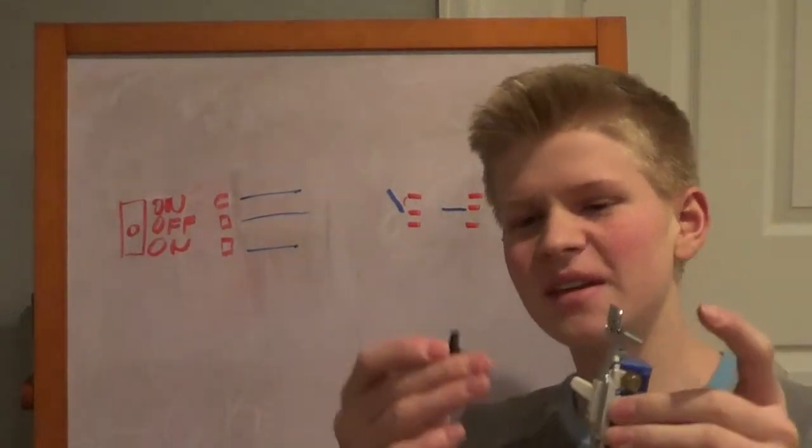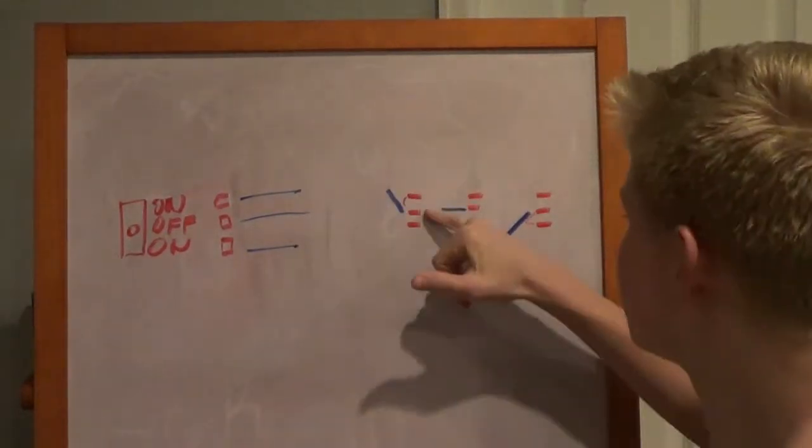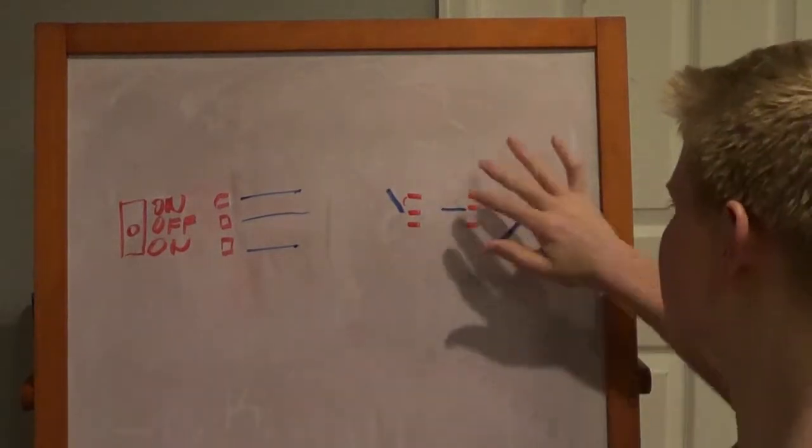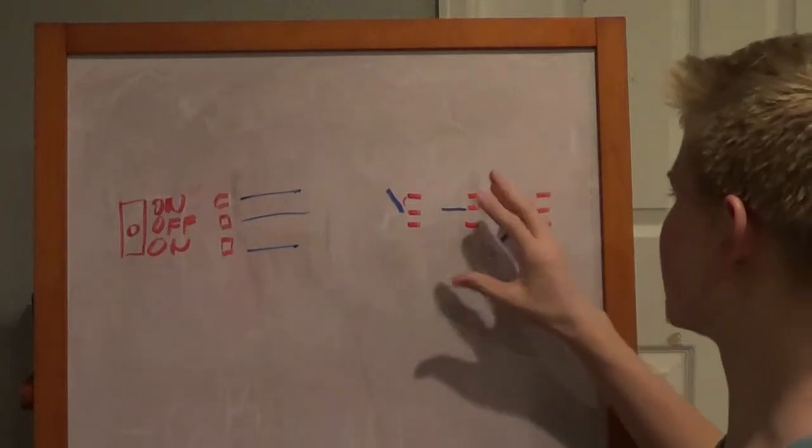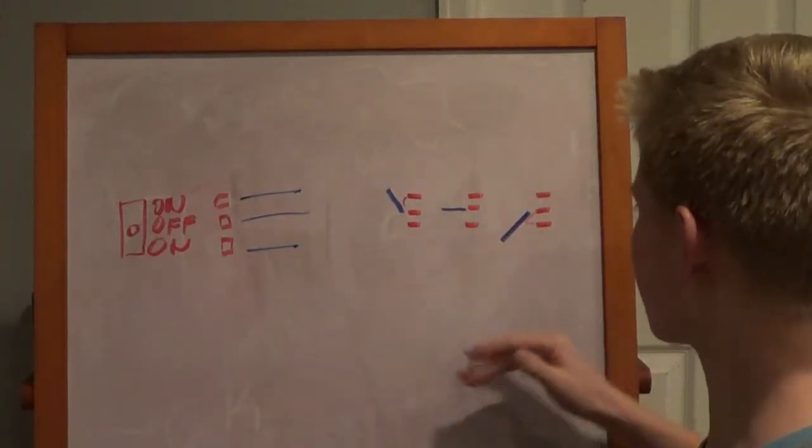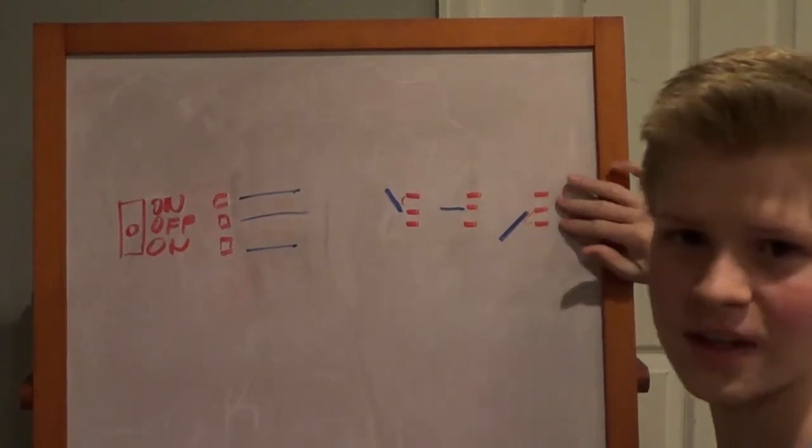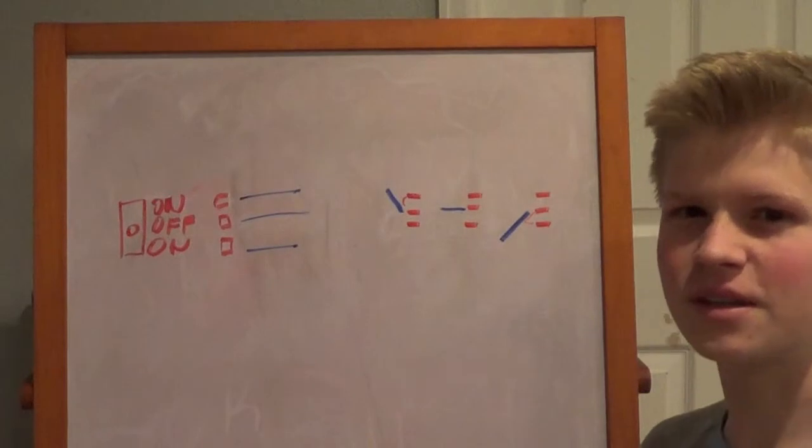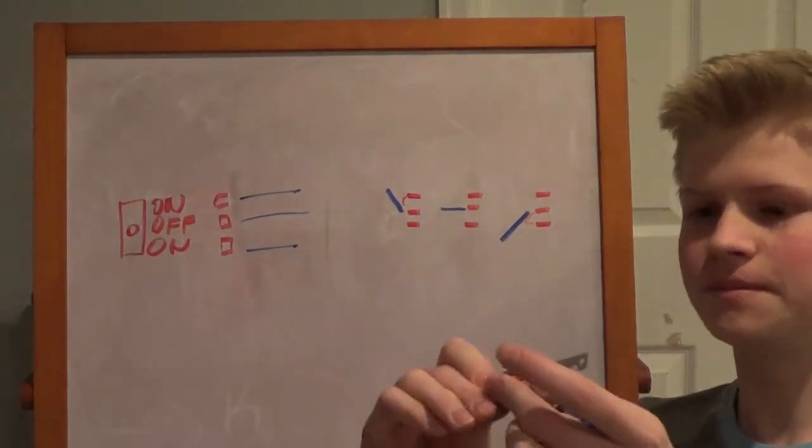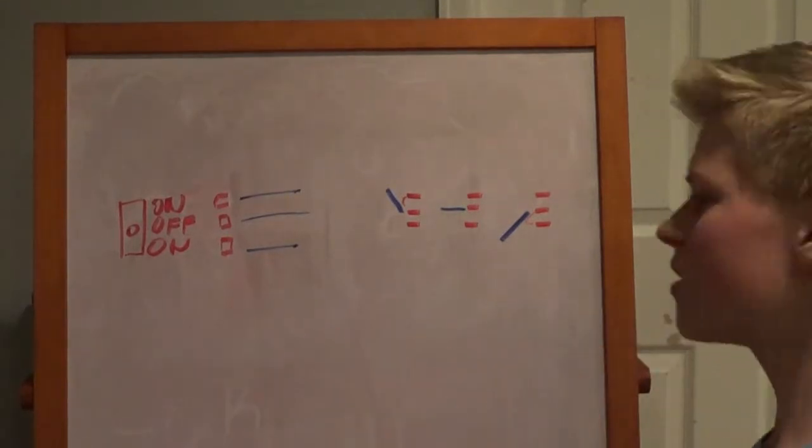So basically, when it's up, these two pins connect, sending voltage. When it's in the middle, no pins connect, so it doesn't send any charge. And when it's pointed down, the bottom two send charge. So it's better to think of it as two toggle switches smashed on top of each other.